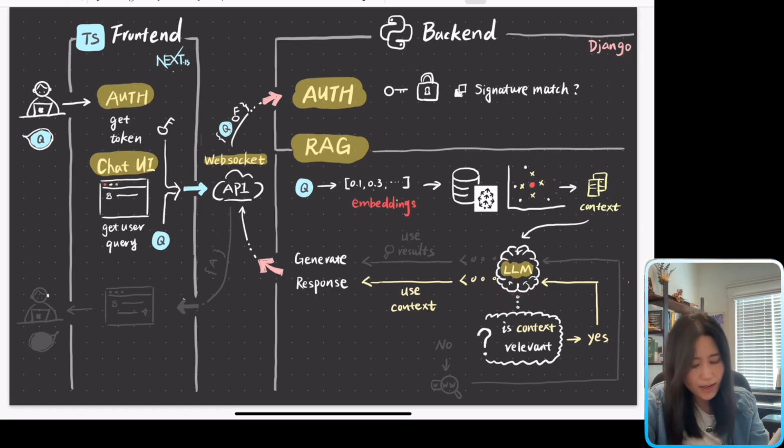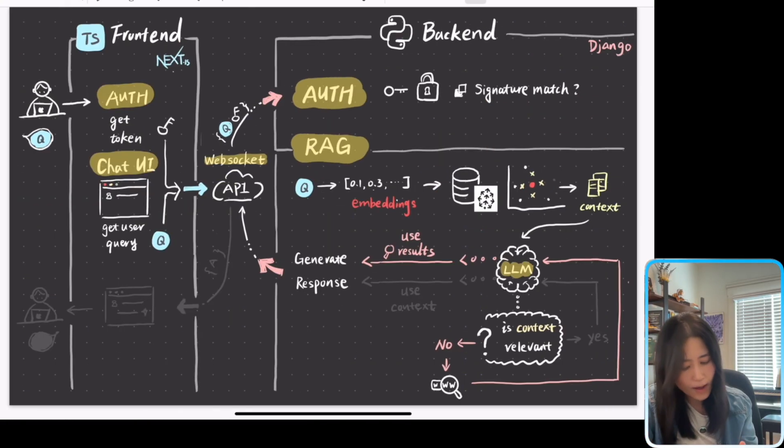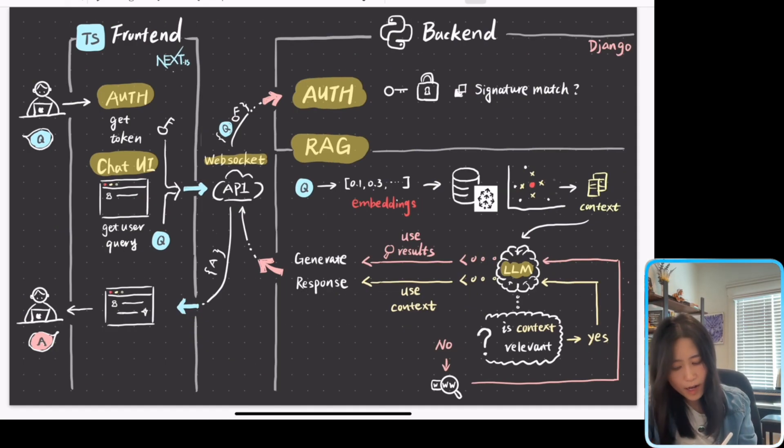And large language model is going to think, is the context relevant to answer the user question? If the answer is yes, then it's going to use the context to generate the response and then send it back to the WebSocket API. However, if the answer is no, then it's going to use WebSearch and then use the WebSearch results to generate the response and again send the response back to WebSocket API. Once the WebSocket API receives the response, it's going to stream token by token in real time to frontend. Frontend will start to display them in markdown format so the user can start to read the answers.